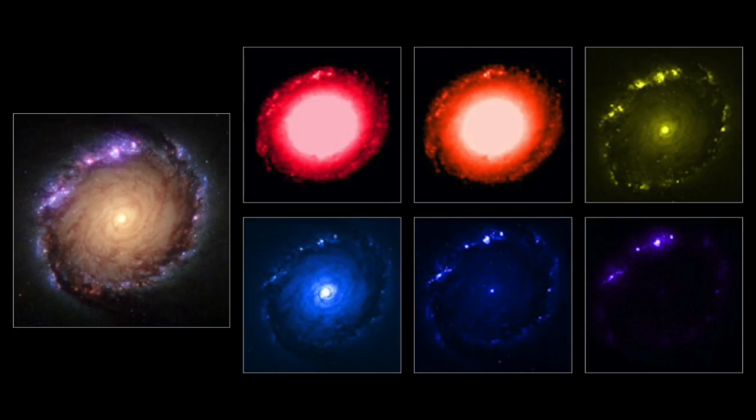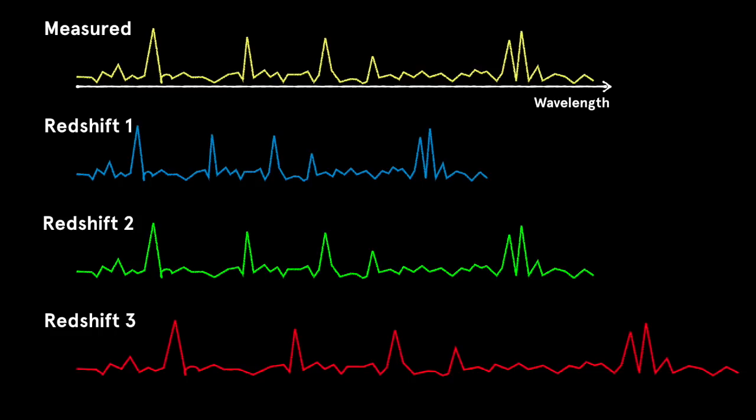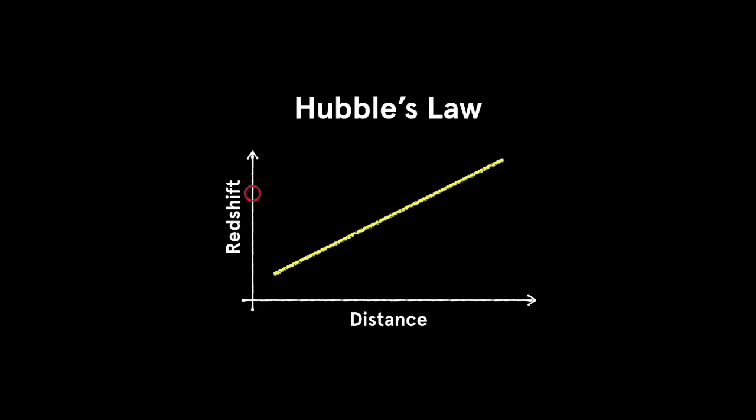And we can compare these to standard libraries of galaxies and look for the redshift that gives the best match. And once we've got a match, we can measure the redshift and, thanks to Hubble's law, map out the galaxies of the cosmos.